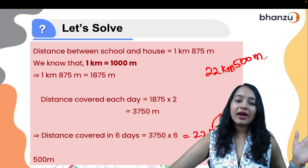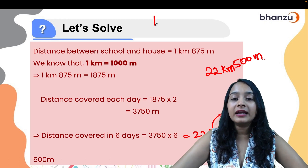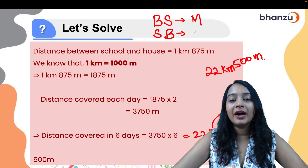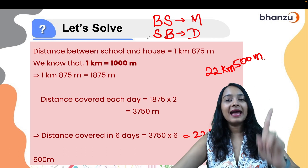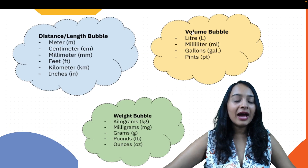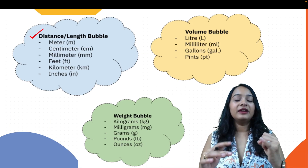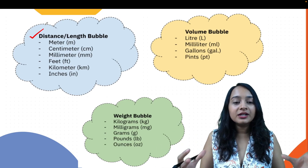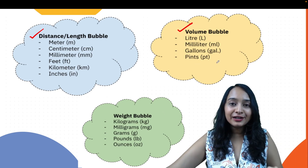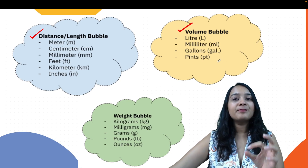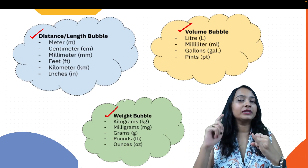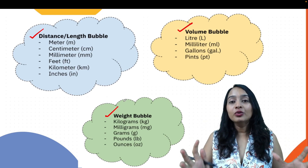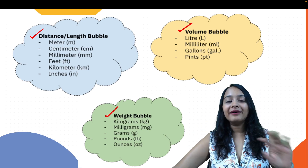Remember: when converting a bigger unit to a smaller one, we multiply; when converting a smaller unit to a bigger one, we divide — Big to Small Multiply, Small to Big Divide (BSMSBD). For distance or length we use meter, centimeter, millimeter, feet, kilometer, or inches. For volume we use liter, milliliter, and gallons. For weight we use kilogram, milligram, gram, pounds, and ounces.